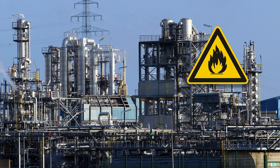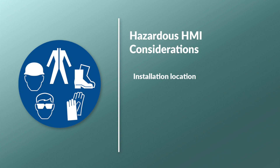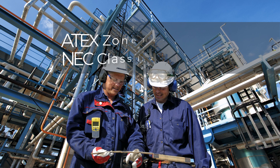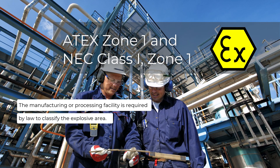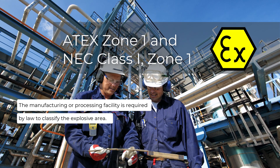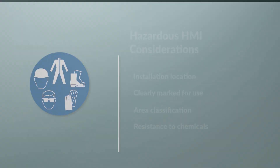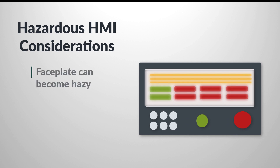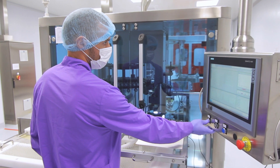Since an HMI is a possible ignition source when used in a hazardous area, consider mounting it in a safe area. If not, the HMI specified must be clearly marked with the certification for use and the area classification — for example, ATEX Zone 1 and NEC Class 1 Zone 1. The manufacturing or processing facility is required by law to classify the explosive area. The material used in the construction of the HMI also needs to be immune to any chemicals present in the atmosphere. If not, the display faceplate is likely to become hazy or the housing may soften. And personal protective equipment, such as gloves, may make it difficult to operate a small display, so a larger screen should be considered.